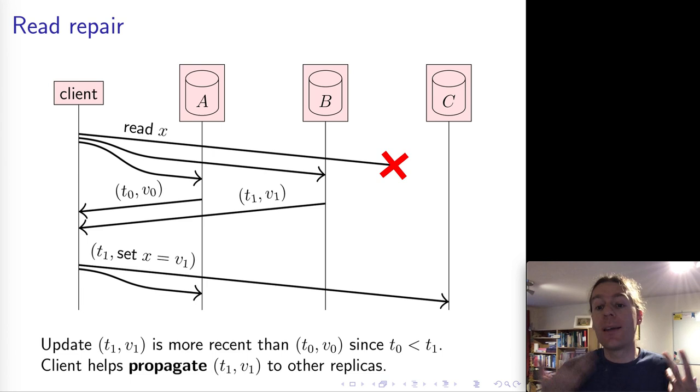And so the client can help clean this situation up by actually sending the update back to A and C. So C might not need it because it might be that C actually has the up-to-date value, but it just didn't respond. There's no harm in sending it again. And certainly we want to send the update to A so that now A and B both have the updated value v1. So notice that we use the original timestamp here because this is effectively just a retry.